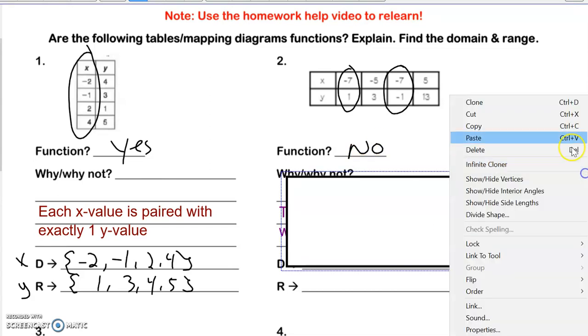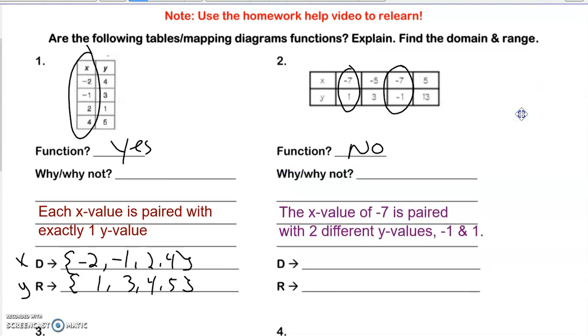And because it's not a function, I'm going to say the x value of negative 7 is paired with two different y values, negative 1 and 1. So again, we're going to put the x values in order from least to greatest. It's negative 7, negative 5, and 5. And then the y values in order from least to greatest. It's negative 1, 1, 3, and 13.